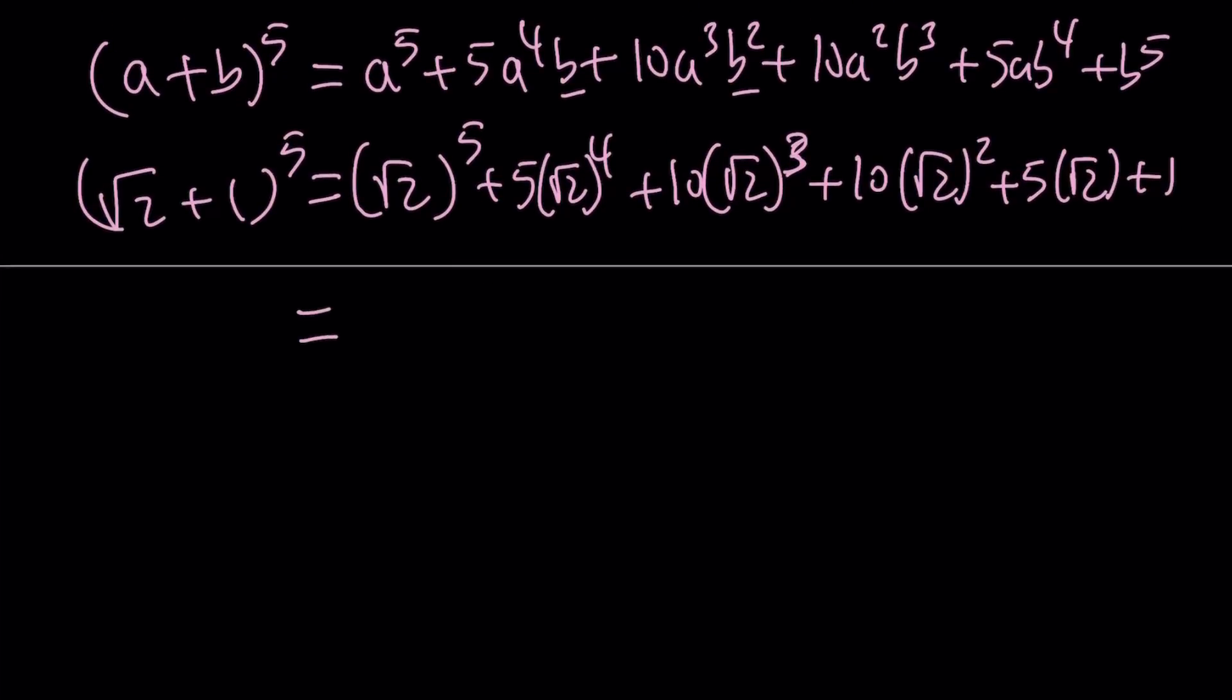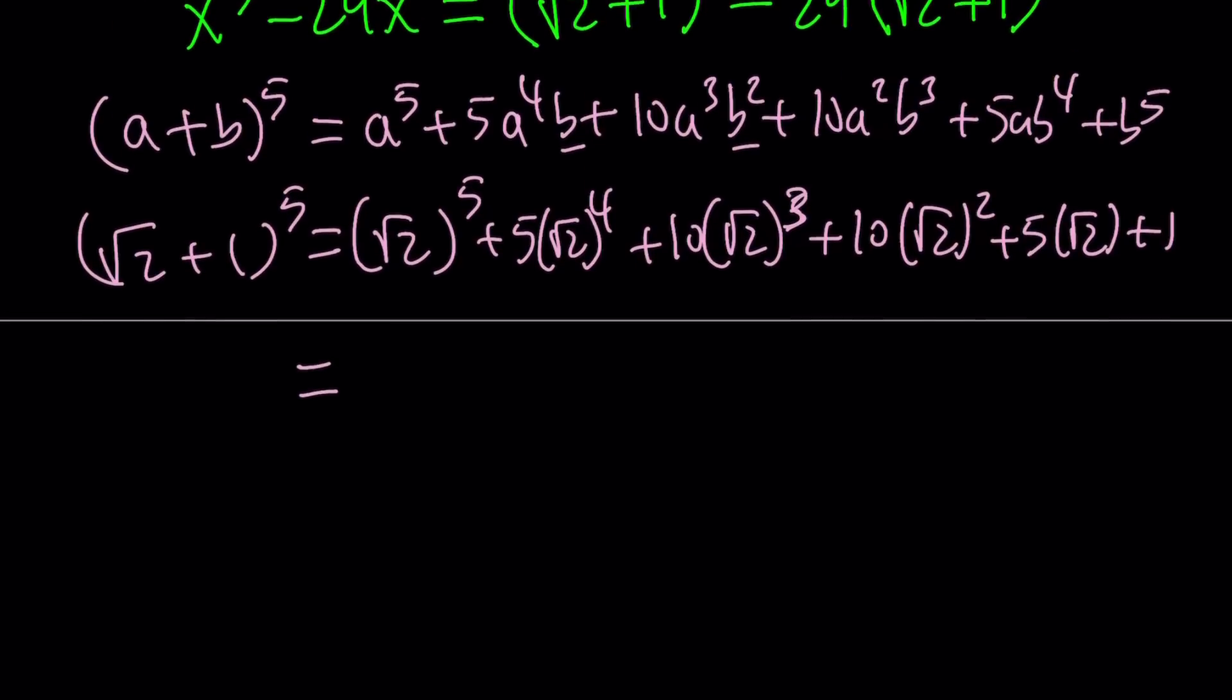Let's go ahead and simplify this first, and now we're going to subtract from it 29 times (√2 + 1). That part is easy.